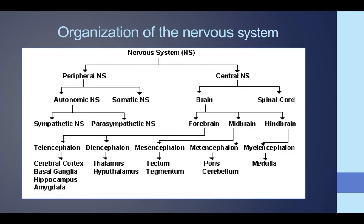The nervous system is organized into two main components: the central nervous system and the peripheral nervous system. The central nervous system is pretty simple — it's broken down into the brain and the spinal cord. It's all one continuous structure, but we're going to think of them as two separate things: the brain and the spinal cord.